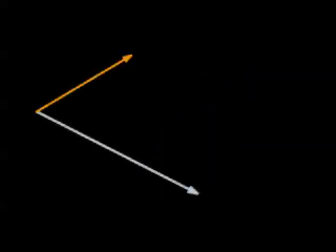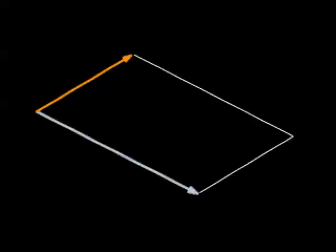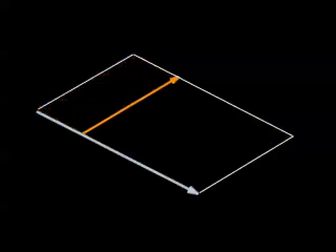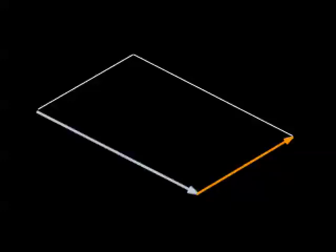For vectors that are not at a right angle, instead of drawing a rectangle, we draw a parallelogram to find the resultant. The tip to tail method works the same way.